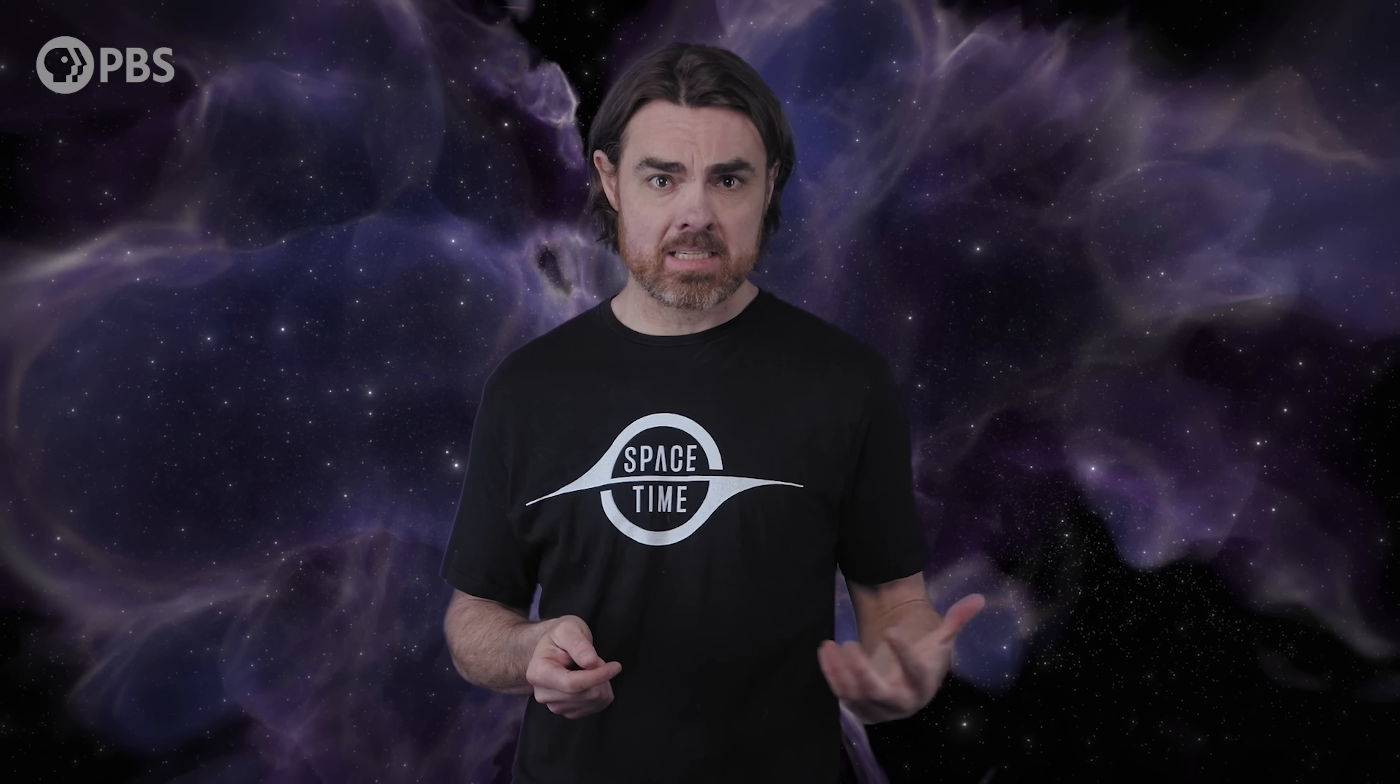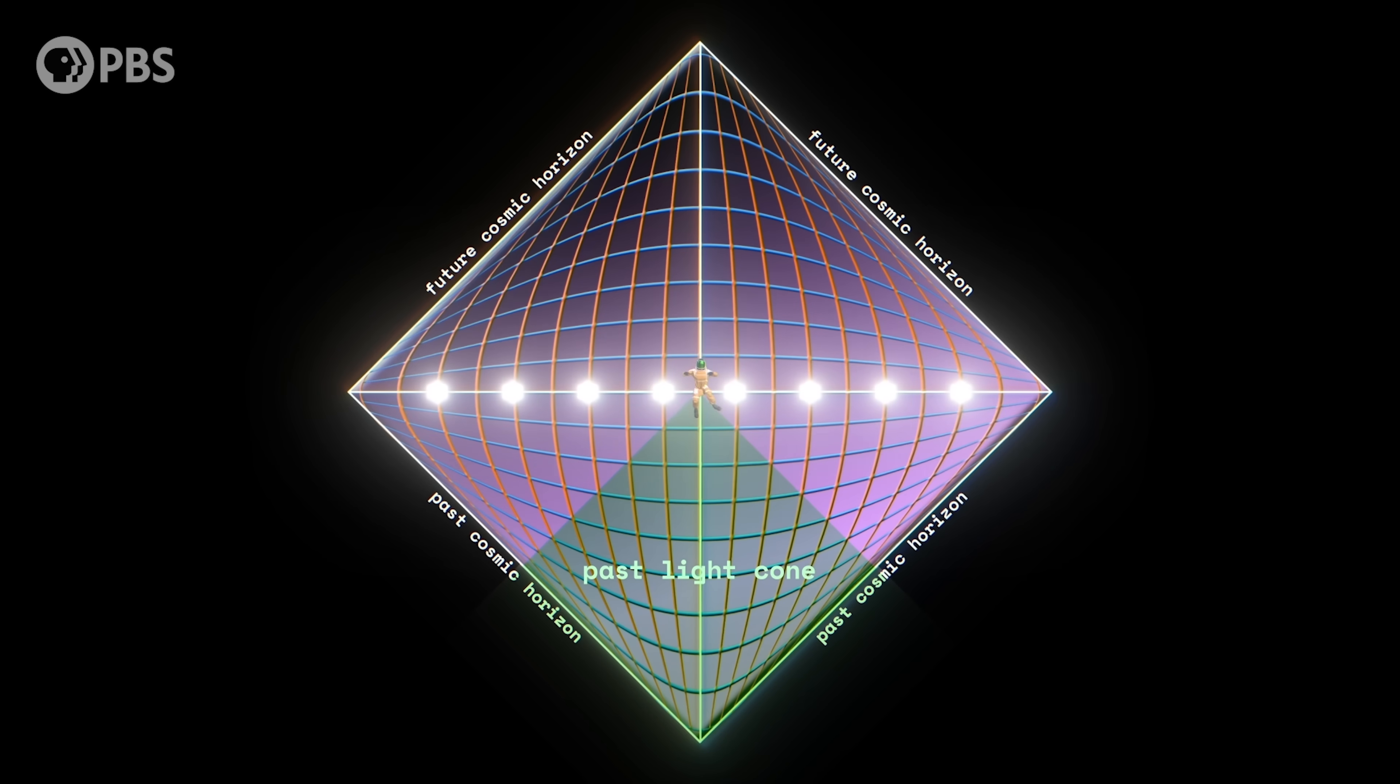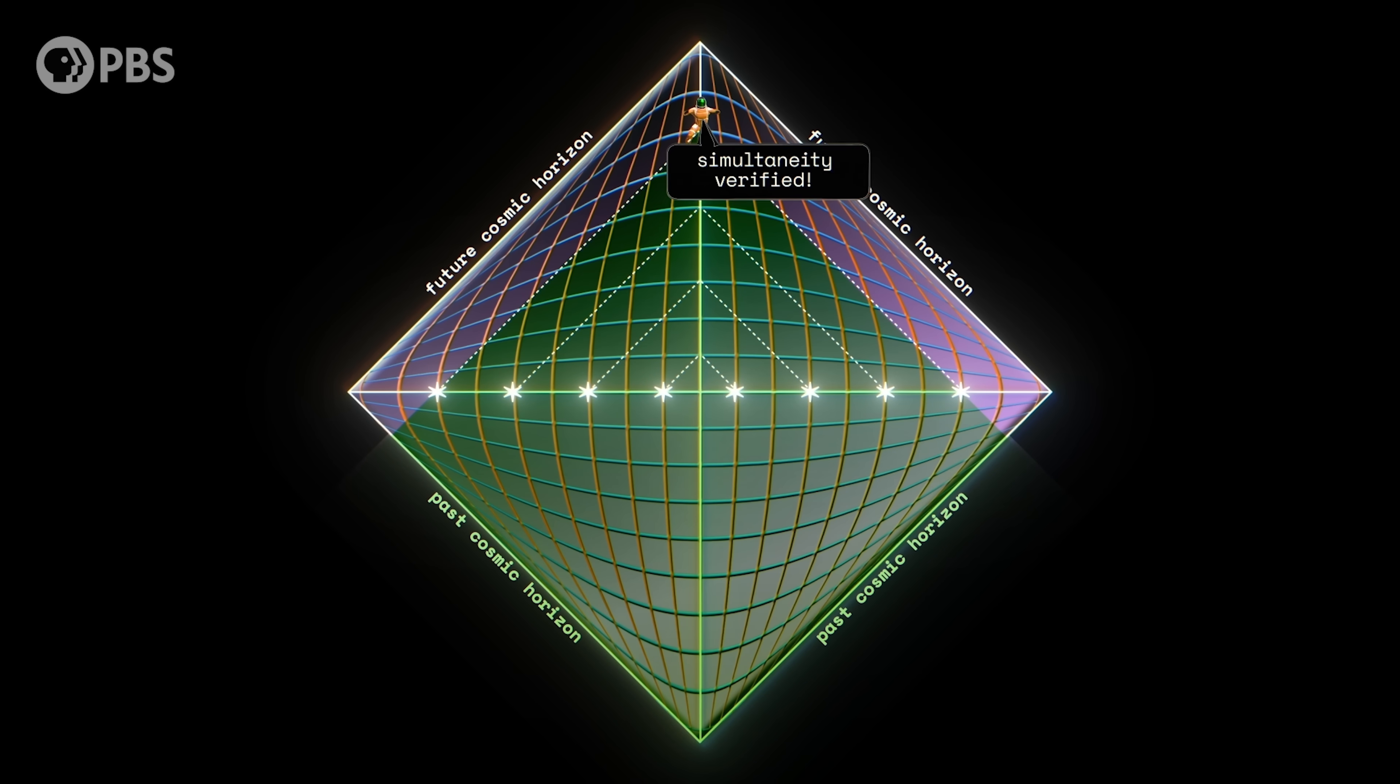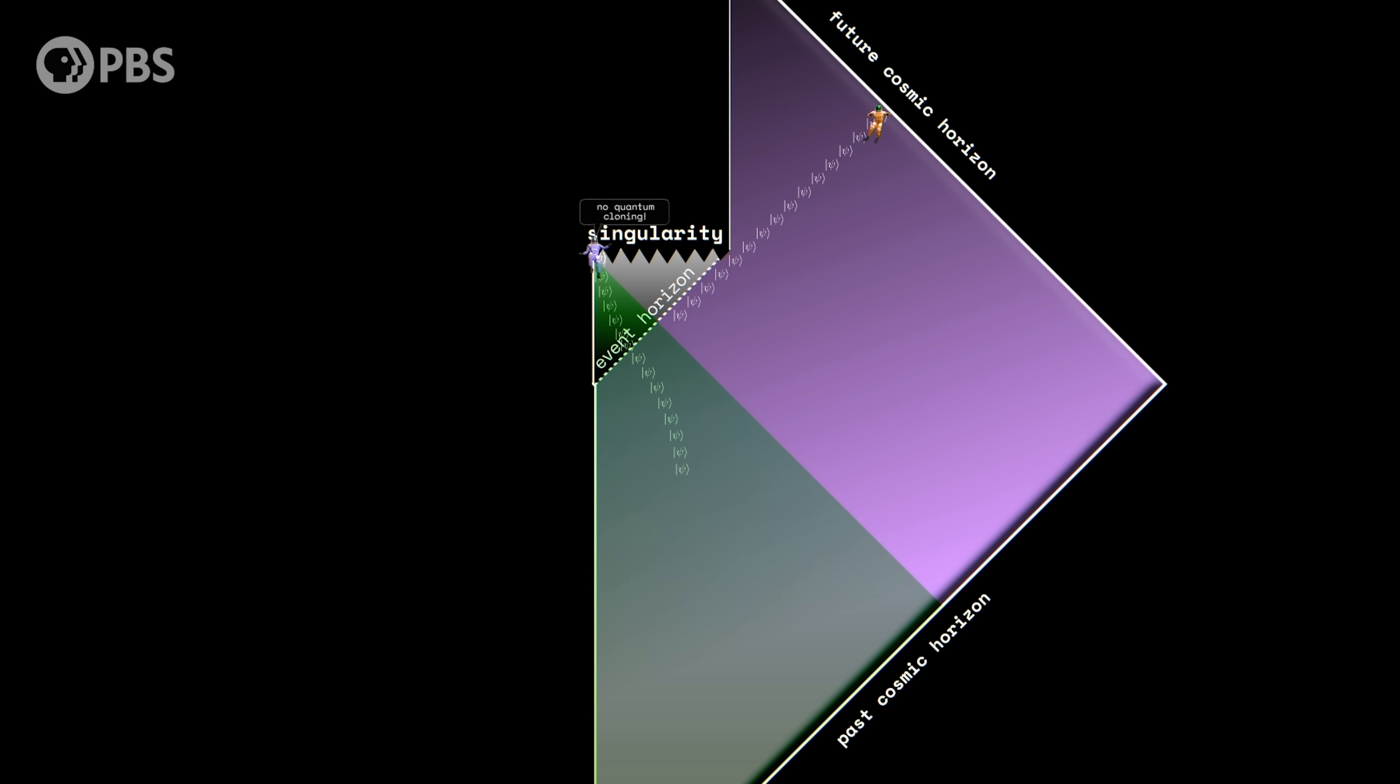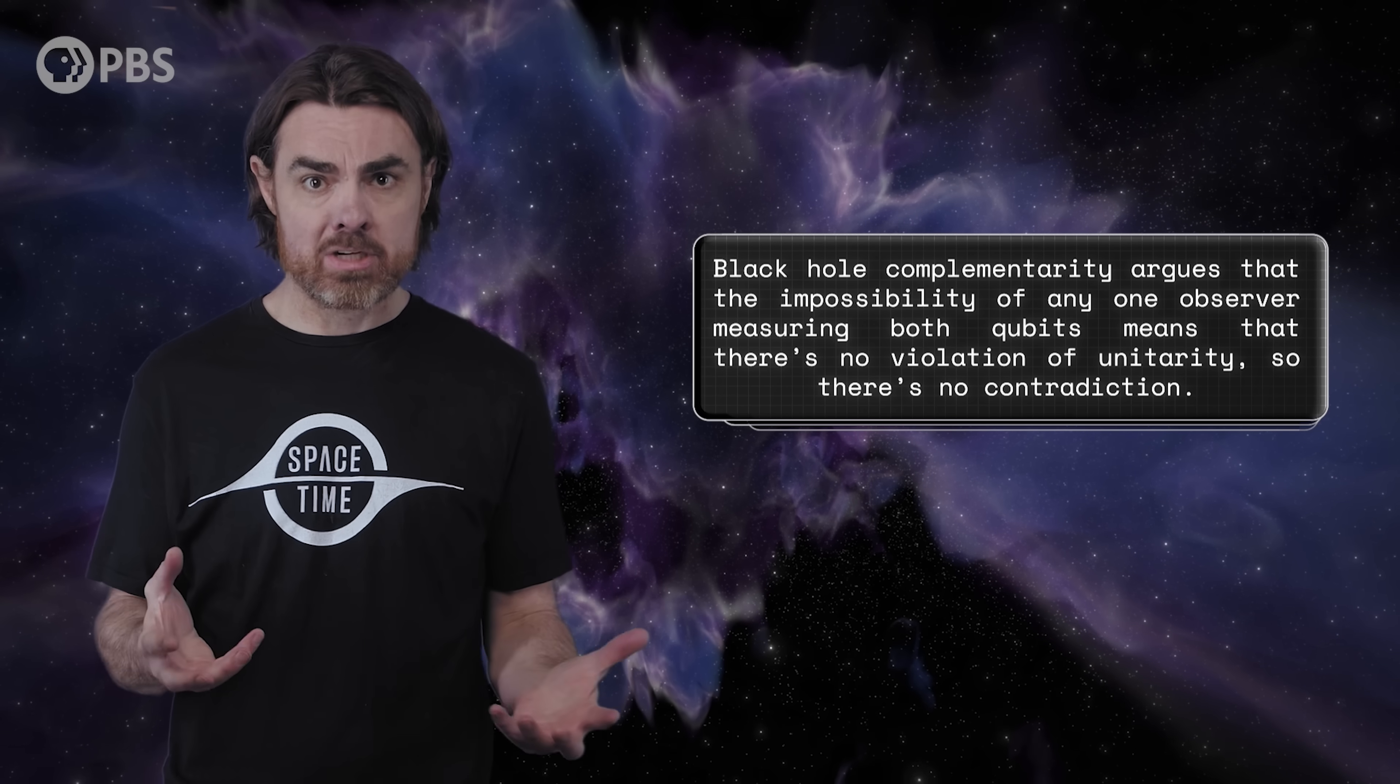The key to this is to really dig into what we mean by existing simultaneously. Due to the finite travel time of light, we can only confirm simultaneous existence at two spacetime points after the light from both reaches us. On our Penrose diagram, we only have information from the parts of the universe from which signals traveling at the speed of light or lower could reach us. That's our past light cone. This is the only region in which we can verify simultaneity. But if we try to do that for our duplicate qubits, we see that there is no past light cone, no possible observer, who can verify that both exist at the same time.